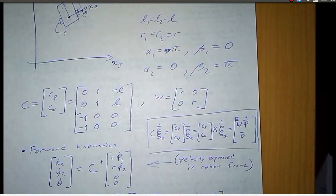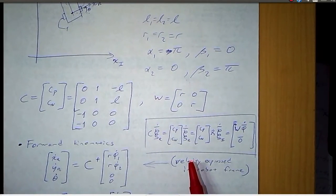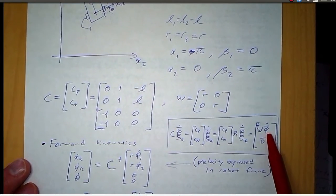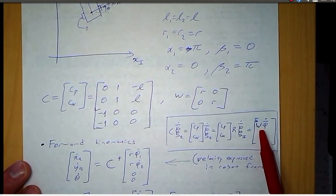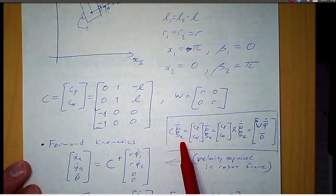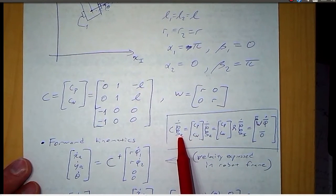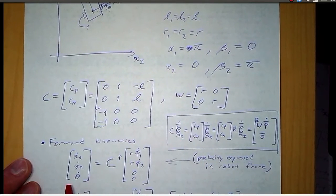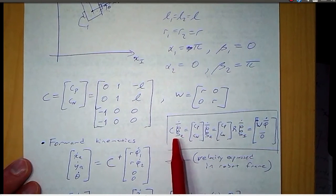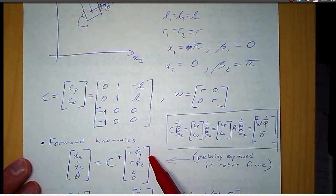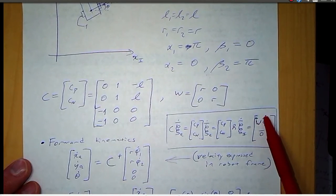To solve the forward kinematics equation, that's the scenario where we know the wheel speeds and the robot parameters W and C, and we want to find the Cartesian velocity: x-dot, y-dot, and theta-dot, expressed in the robot frame. So psi-dot-r equals x-dot-r, y-dot-r, theta-dot. We left-multiply both sides by the pseudo-inverse of C, giving us C-pseudo-inverse times the vector [R·phi1-dot, R·phi2-dot, 0, 0].